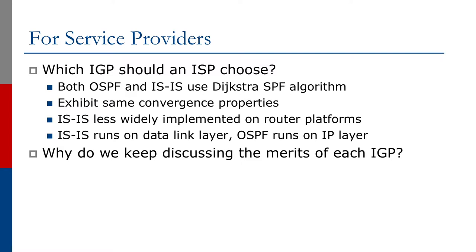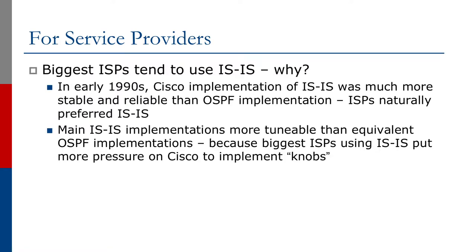So why do we keep discussing the merits of each IGP so frequently? The biggest ISPs tend to use IS-IS. In the early 1990s, Cisco's implementation of IS-IS was much more stable and reliable than their OSPF implementation, so ISPs naturally would prefer IS-IS. The main IS-IS implementations were much more tunable than the equivalent OSPF implementations, because the biggest ISPs using IS-IS put more pressure on Cisco to implement these knobs.